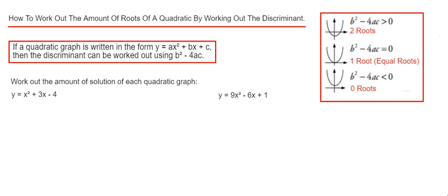The discriminant is b squared minus 4ac, and if it comes out larger than 0 we have two roots, so it crosses the x axis twice.